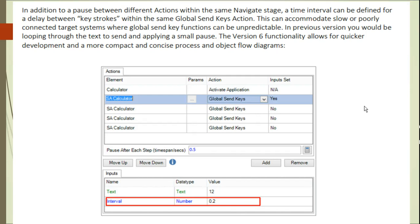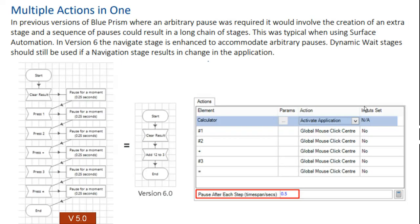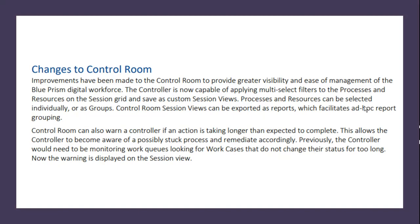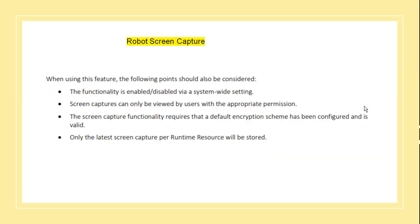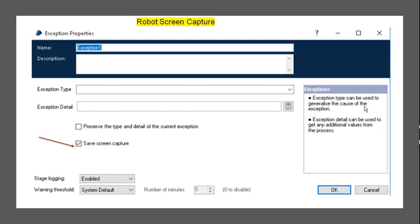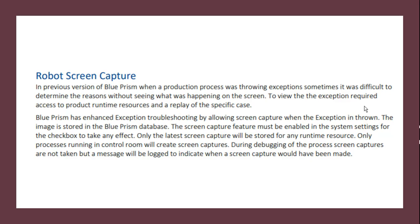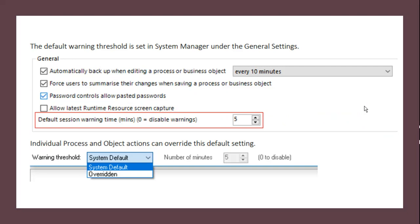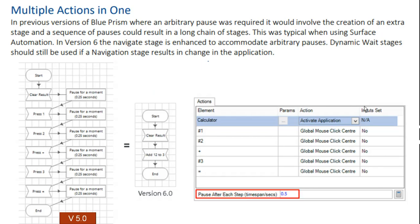Version 6 functionality allows for quicker development and more compact, concise process and object flow diagrams. These are the three important features: robotic screen capture, changes to control room, and multiple actions in one — both are very good features which have been introduced by Blue Prism. Thanks for watching this video.